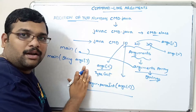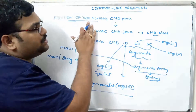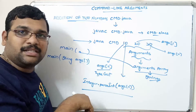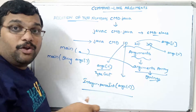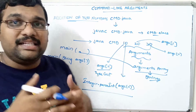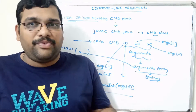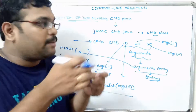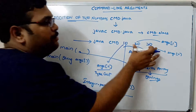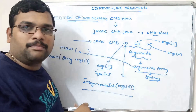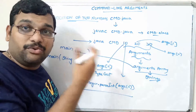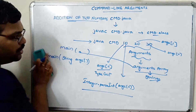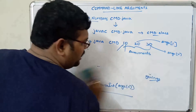To add two numbers using command line arguments, we need not write any input statements in the program. That means we are not writing any Scanner class or BufferedReader class. We simply pass the inputs at the command prompt while executing the program. Let us write the program so that you can easily understand.